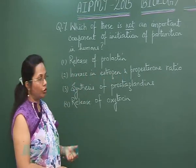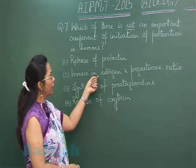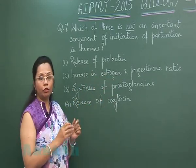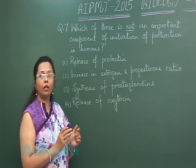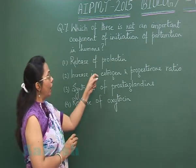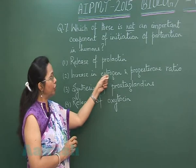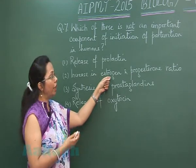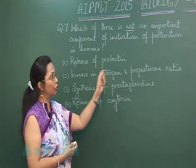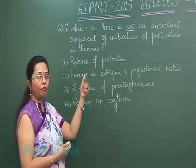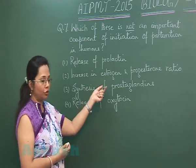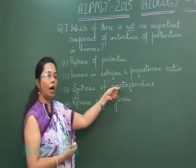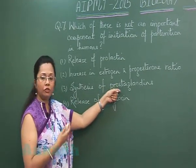The increase in estrogen to progesterone ratio is correct because progesterone has to be brought down to remove the block so that uterine contraction can begin. At the time of parturition, estrogen secretion from the placenta increases compared to progesterone, so this ratio will favour estrogen. Prostaglandins are derived lipids which cause contractions of the smooth muscles of the uterus.